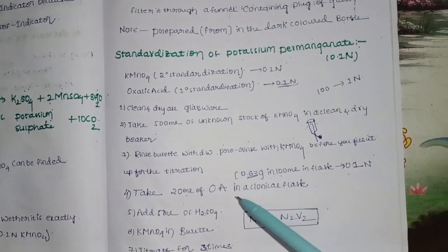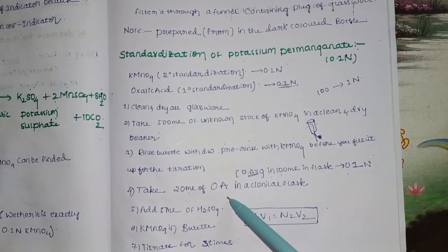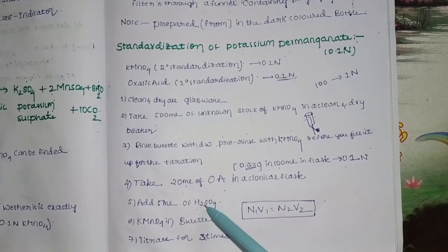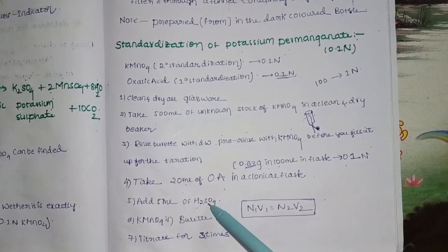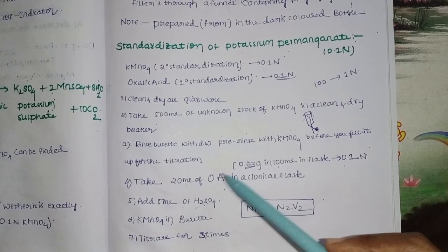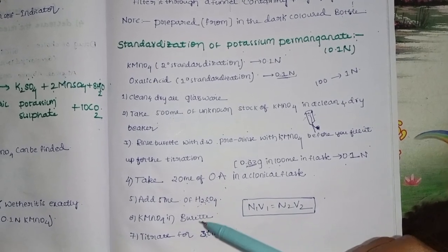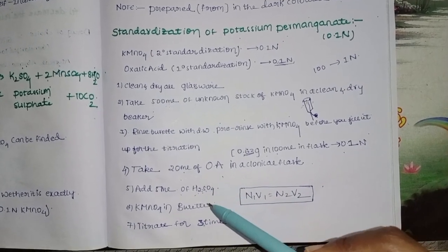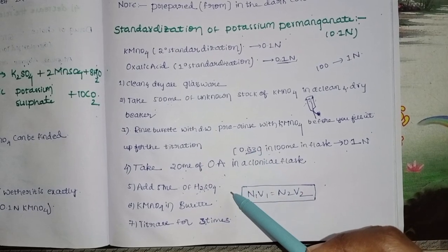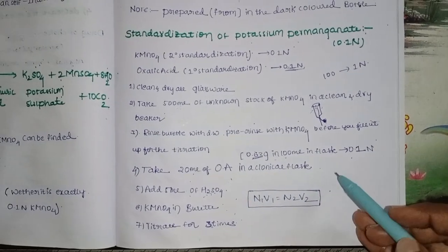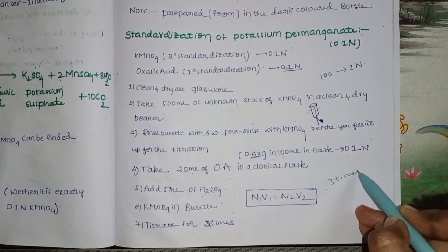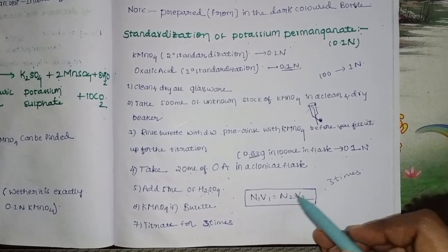Add 20 ml of oxalic acid into a conical flask, then add 5 ml of dilute sulfuric acid. Titrate the oxalic acid against KMnO4 from the burette. Repeat the titration three times and take the average volume.